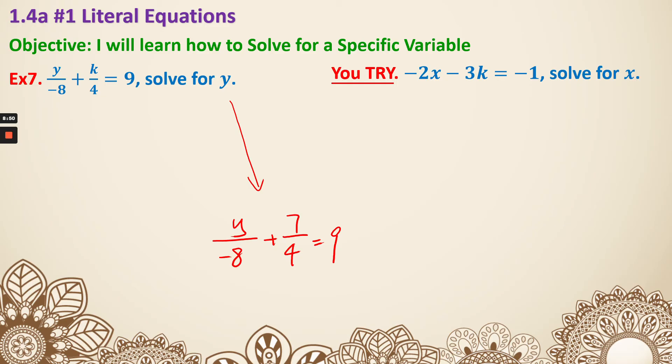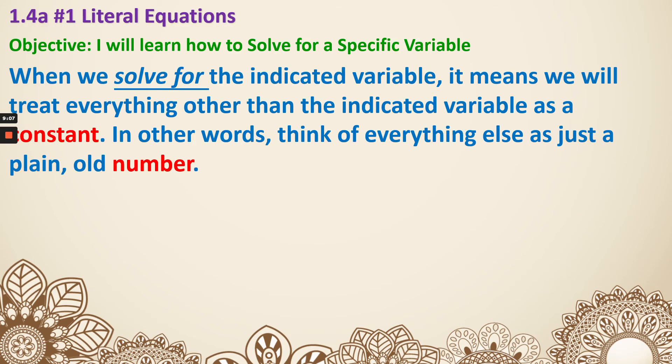When it's all fractions, we are going to find the common denominator for all the denominators, which in this case is -8. And we're going to multiply every single thing by -8. Now this requires, well this is something we have talked about right here. We will treat everything other than the indicated variable as a constant, or in other words, a number.